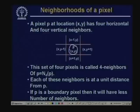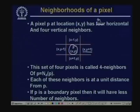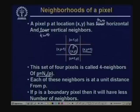This pixel p has two neighbours in the horizontal direction and two neighbours in the vertical direction. These total 4 pixels are called the 4-neighbours of point p and are represented by N4(p). Each of these neighbours is at a unit distance from point p. Obviously, if p is a boundary pixel, then it will have fewer neighbours.